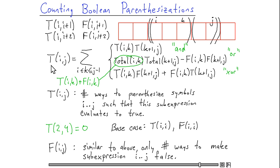So this completes my recursive expression for T(i,j) in terms of solutions to smaller subproblems. I can write a similar expression for F(i,j) but I'll leave that as an exercise to the reader because it's very similar.